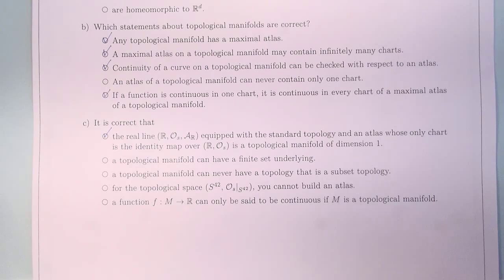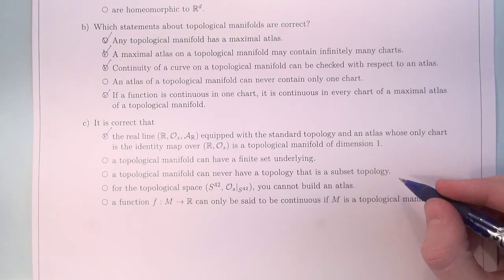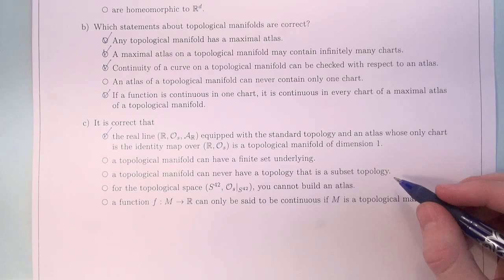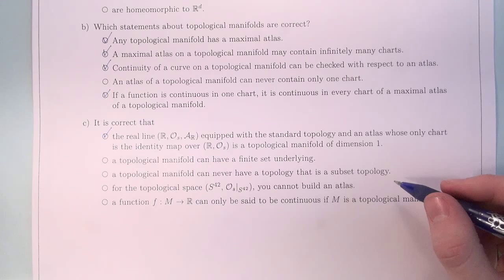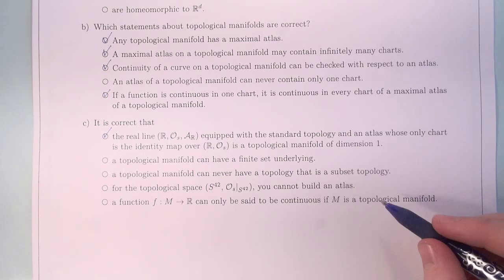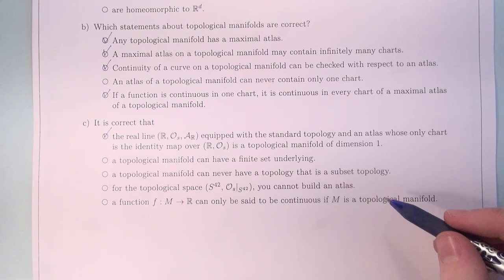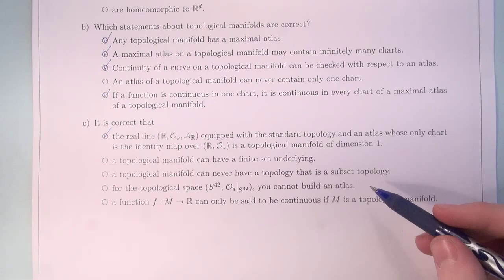A topological manifold can never have a topology that is a subset topology — well, this is pure nonsense. We saw many examples in the lecture where there was a subset topology on a topological manifold. The topological space S^42, which is the 42-dimensional sphere — we cannot build an atlas for it? Well, of course we can. There is no reason why we shouldn't be able to do so. Wrong.